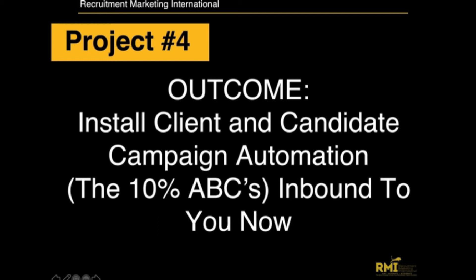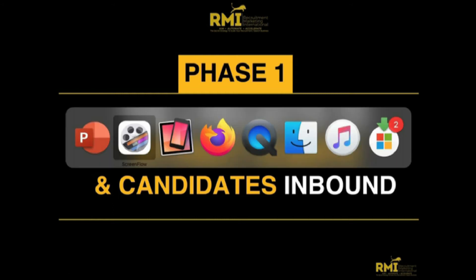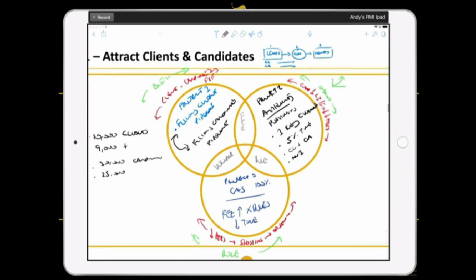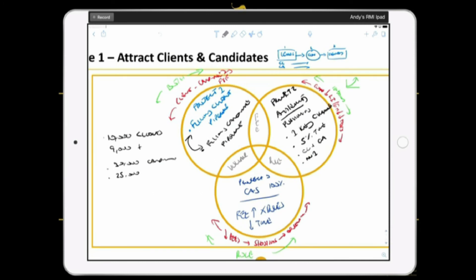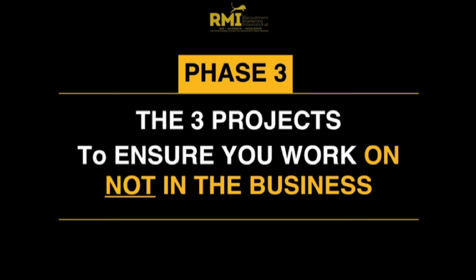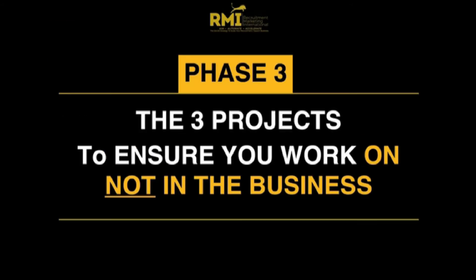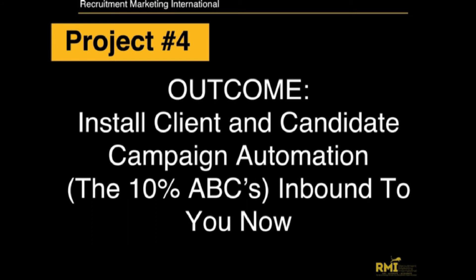When you've got the data set from project one — project one was about attracting the clients and candidates — we've built these data sets, this CRM full of candidates, which can be done in a matter of weeks. Whether it's a database full of candidates or clients, we've got complete power. With this second phase about automating and bringing this lead flow and candidate flow in, project four installs the client and candidate campaign automation — which is: I need candidates now, I need clients now.